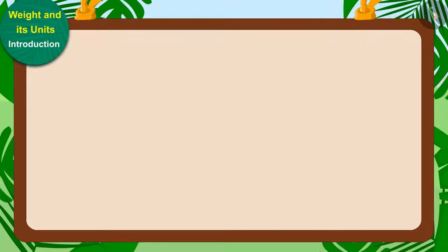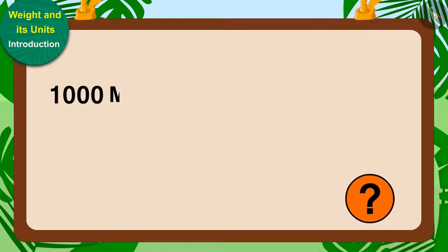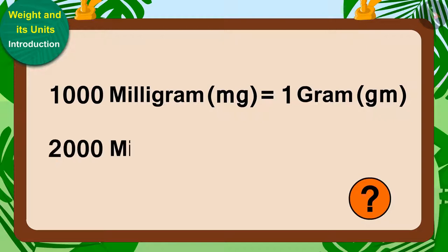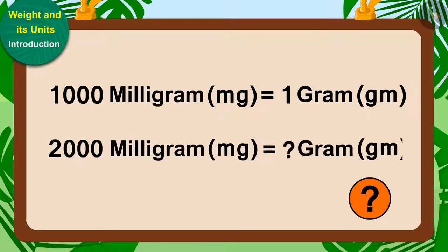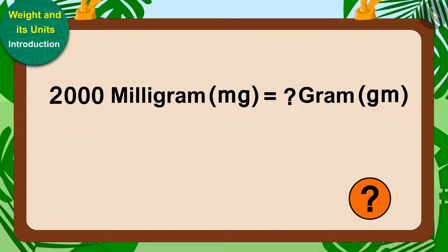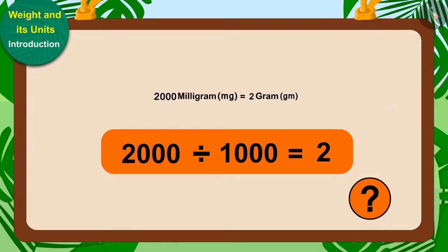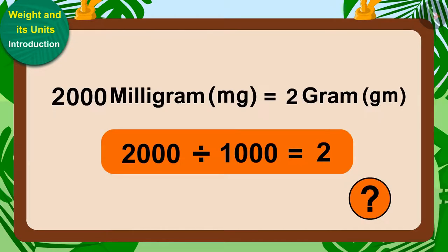Children, do you know that 1,000 milligrams is equal to 1 gram? So how many grams would 2,000 milligrams equal to? That's right. 2,000 divided by 1,000 is 2 grams.